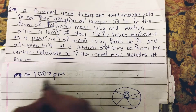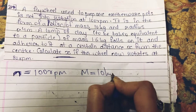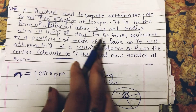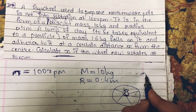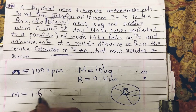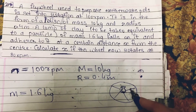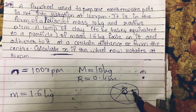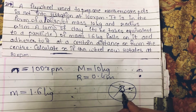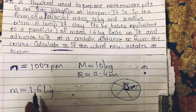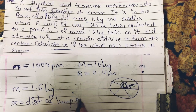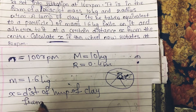The disk has a mass of 10 kg and radius — let me represent it with capital R — 0.4 meter. A lump of clay, to be taken as equivalent to a particle, has a mass of 1.6 kg. This lump of clay falls on the flywheel and sticks to it at a certain distance x from the center. So x is the distance of the lump of clay from the center of the flywheel.